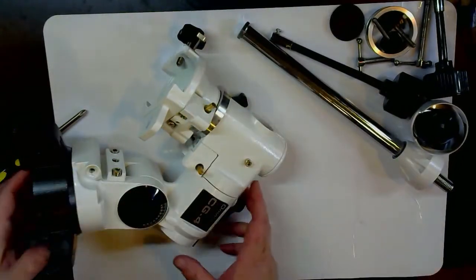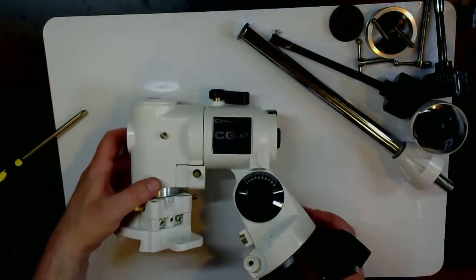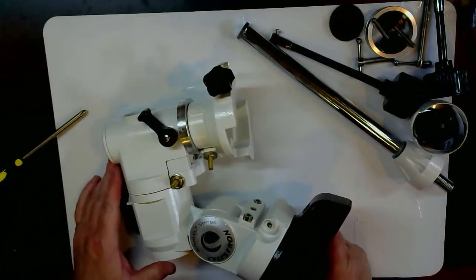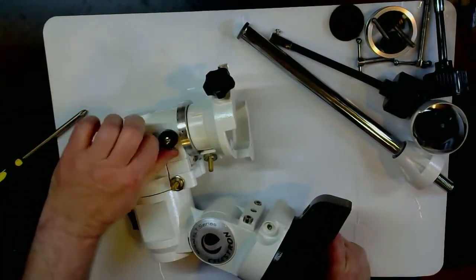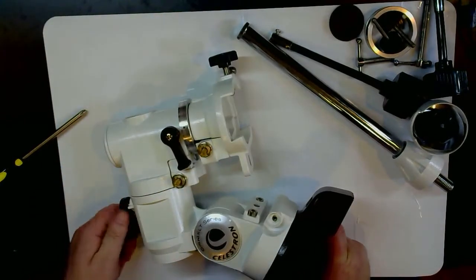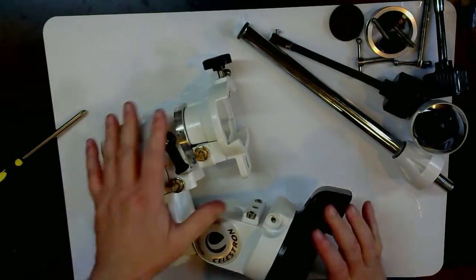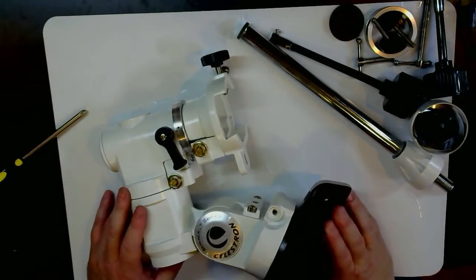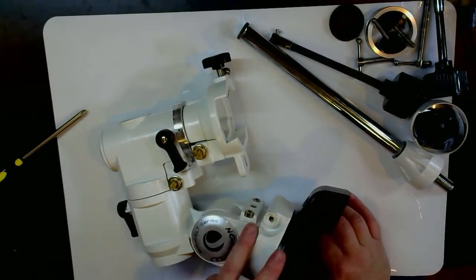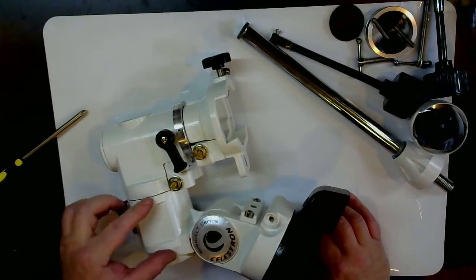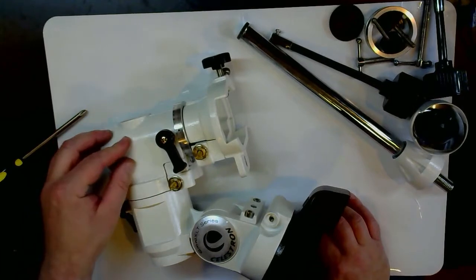On the end is a toe saver screw that can stay there. Now what we have is basically the bare mount. If I flip this over we'll see the other side. Right now all the axes are loose so the whole thing can kind of move around. This is our bare mount and there are three primary parts to it: there's the base here, there's the right ascension housing here, and there's the declination housing here.